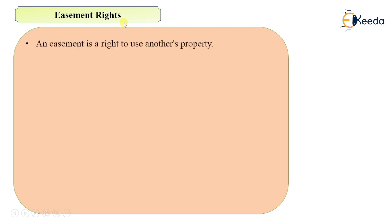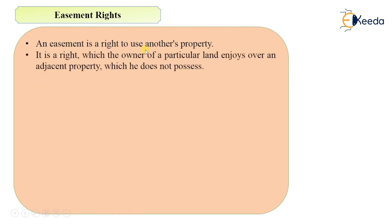What are these rights? An easement right is a right to use another's property. It is a right which the owner of a particular land enjoys over an adjacent property which he does not possess. For example, you have a small plot on which you have constructed a property but it is not very sufficient for you. Maybe you want to have some road access from a neighbor's property, or if you want to repair something you have to go to your neighbor's property.